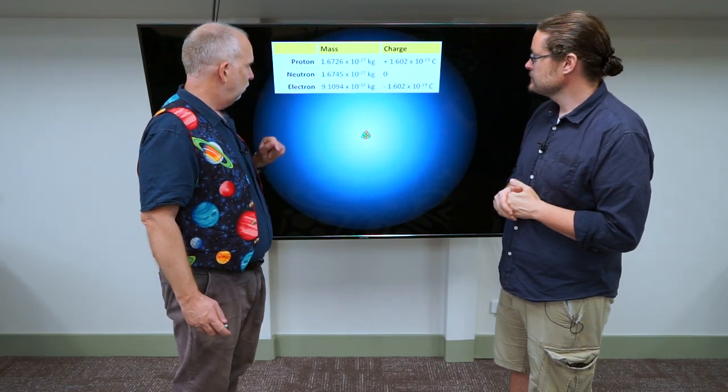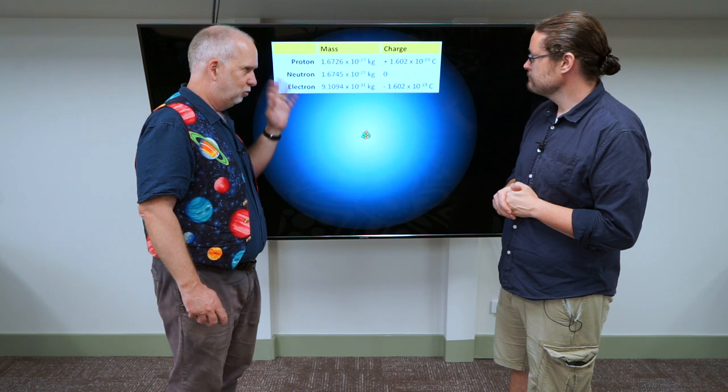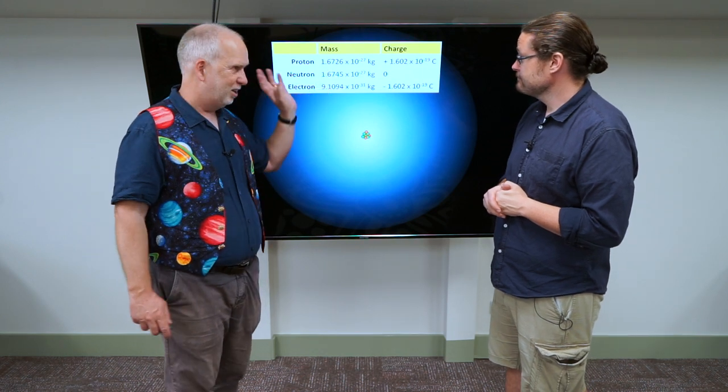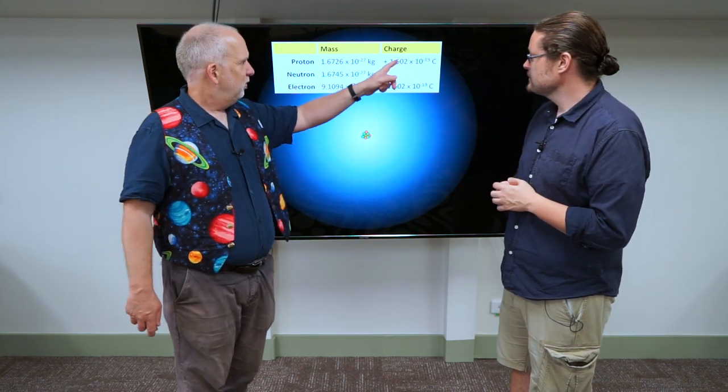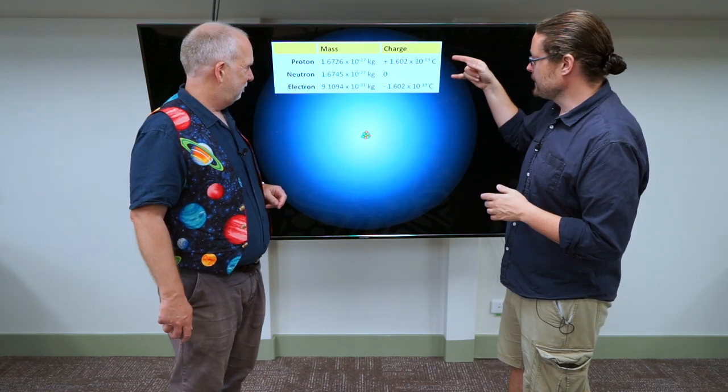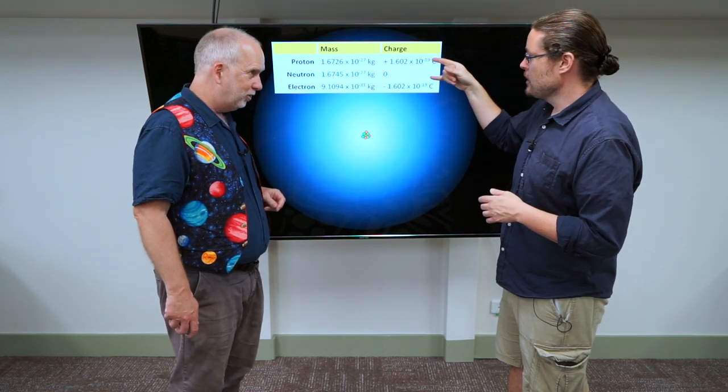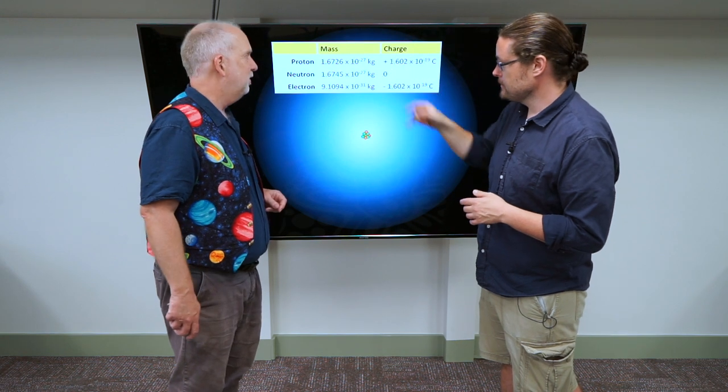And then you have protons, which weigh 2,000 times more than an electron, 1,800 and something. Same charge, only positive rather than negative. So these are exactly equal charges. Equal and opposite. But very different masses.